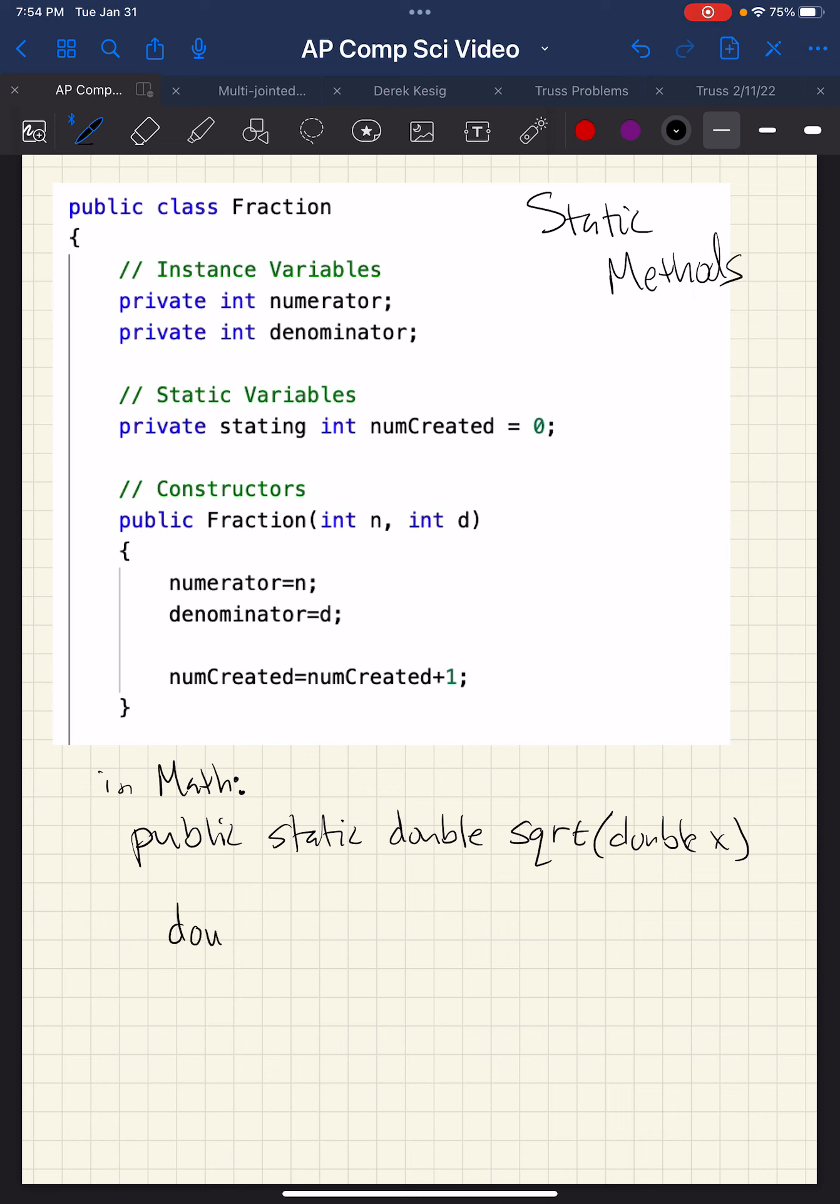So you can say double A equals math dot SQRT of 16, and then A will take on the value 4.0. Notice that it's here, the class, not an object that's taking the action.